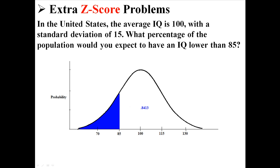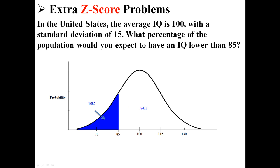Now what we want is the area in the tail, which is a smaller portion. So we can just do 1 minus 0.8413, and we find out that the area in the tail is 0.1587. So the percentage that we would expect to have an IQ lower than 85 is about 16%.